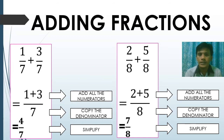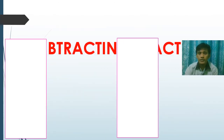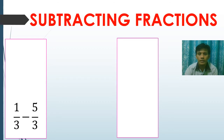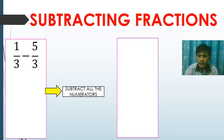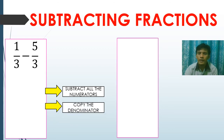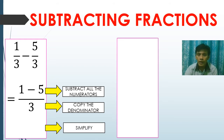Let's go on to subtracting fractions. Example: one over three minus five over three. The given problem has similar denominators. First step: subtract all the numerators. Second step: copy the denominator. One minus five over three — simplify one minus five and that is negative four over three, which is already in simplest form.